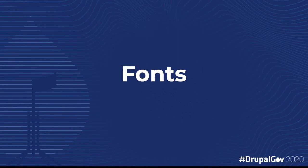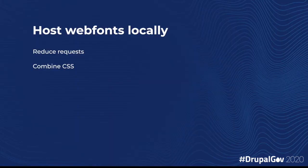Web fonts are also a good candidate for low-hanging optimization. There are three things we can do to improve performance here: locally hosting web fonts, subsetting, and using fallbacks. Locally hosting your web fonts improves your time-to-paint speeds by reducing the amount of HTTP calls made before rendering your text.